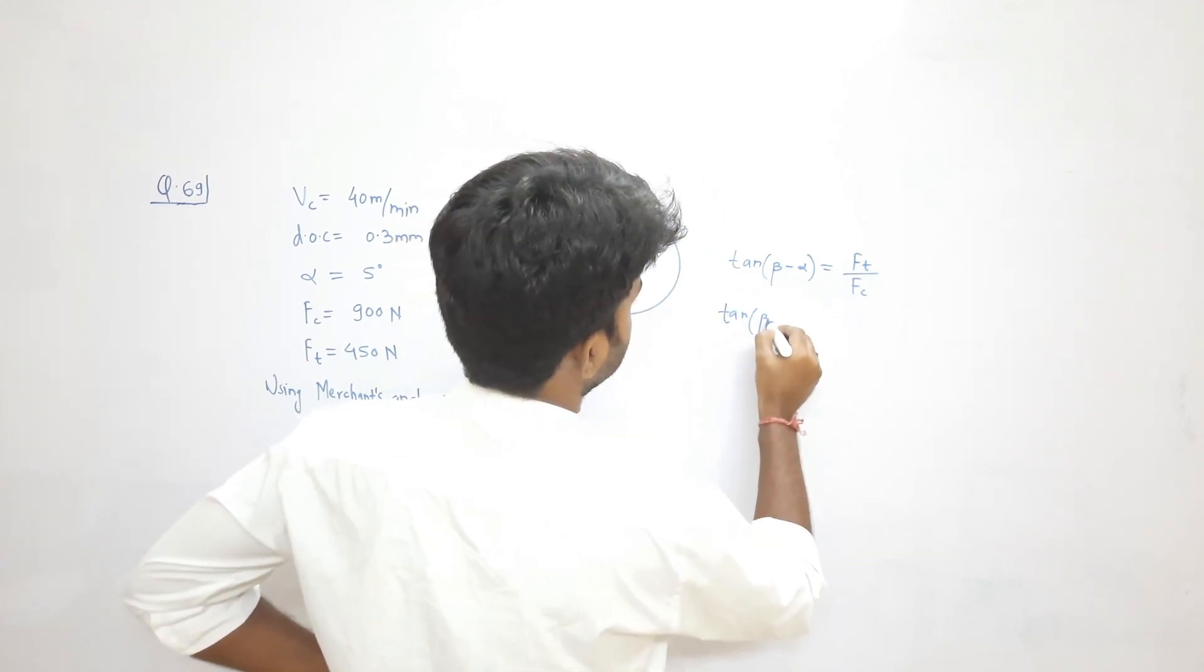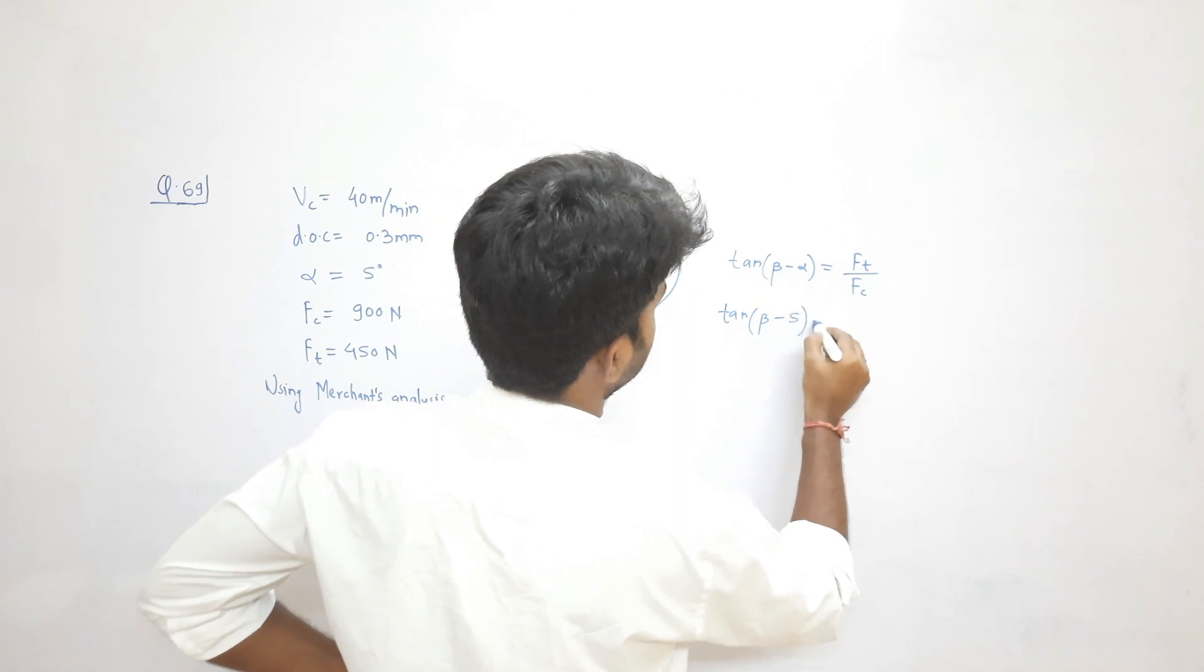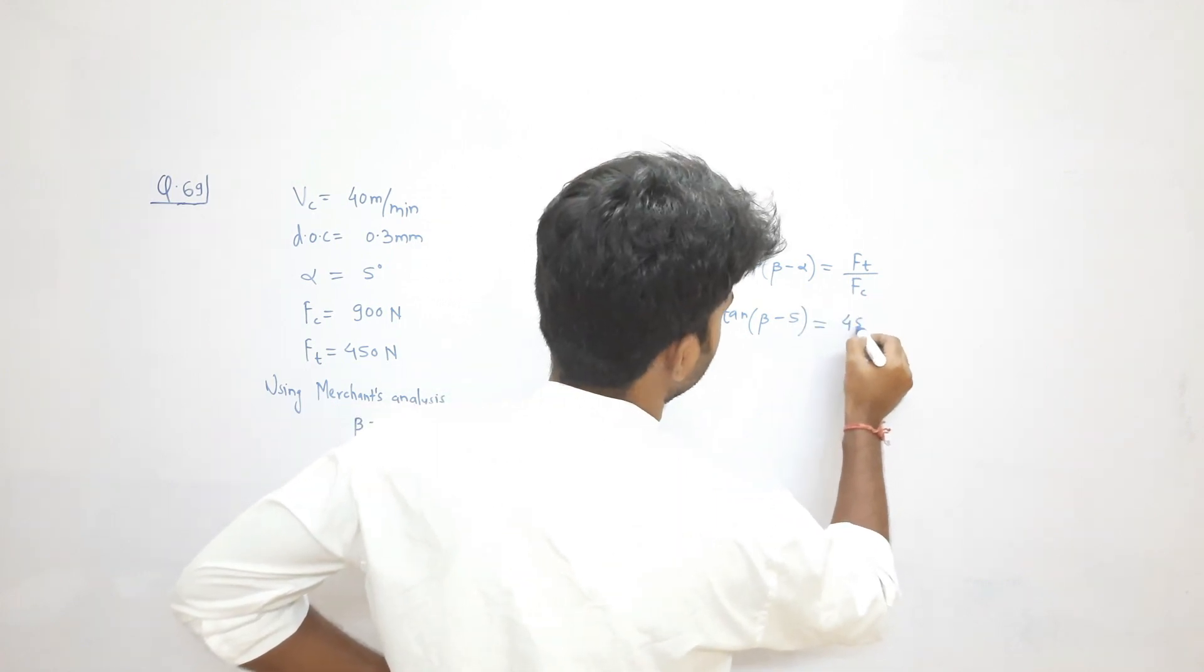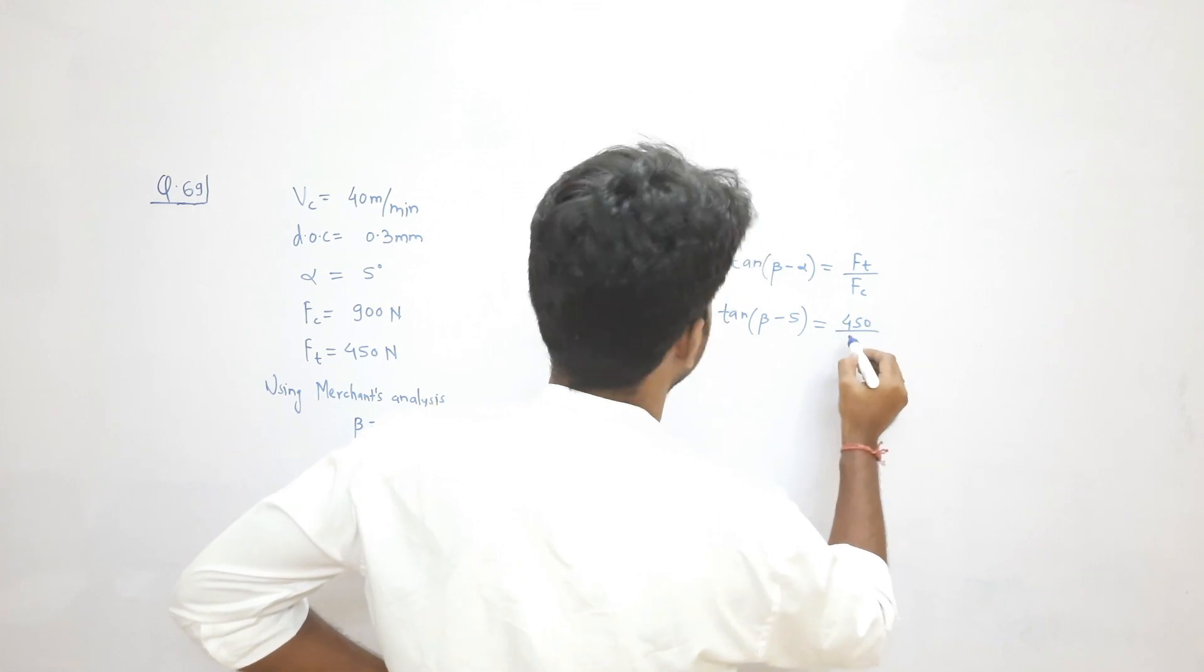Tan of beta is unknown. Alpha is 5 degrees. This equals thrust force 450 divided by cutting force 900.